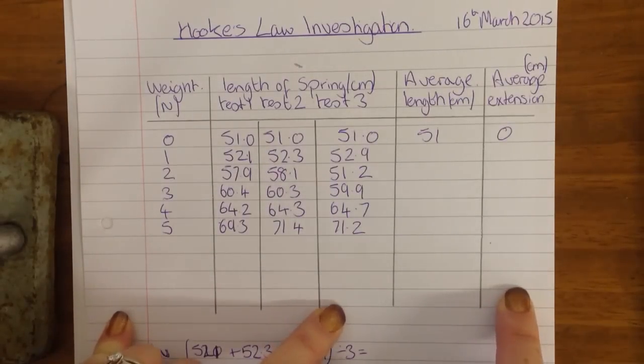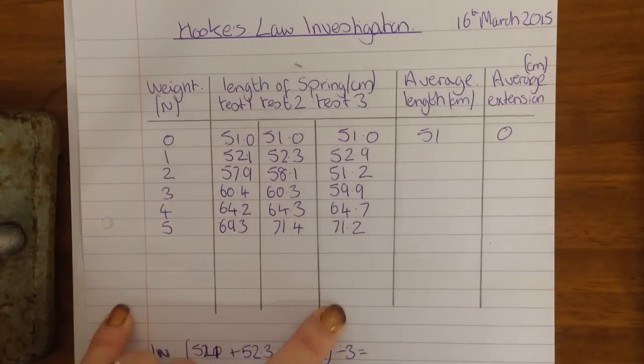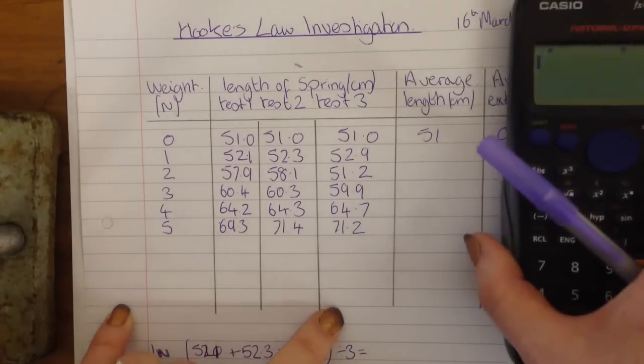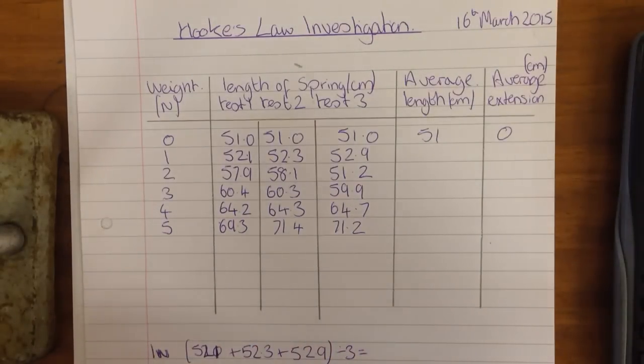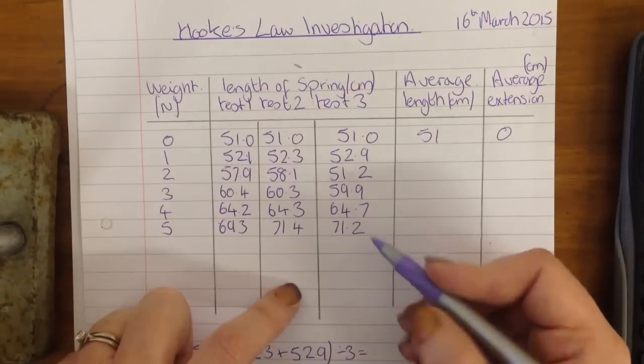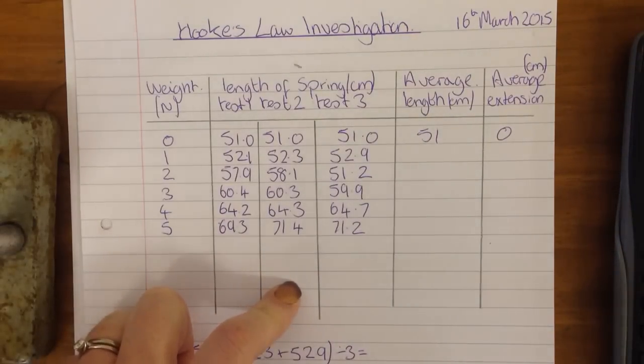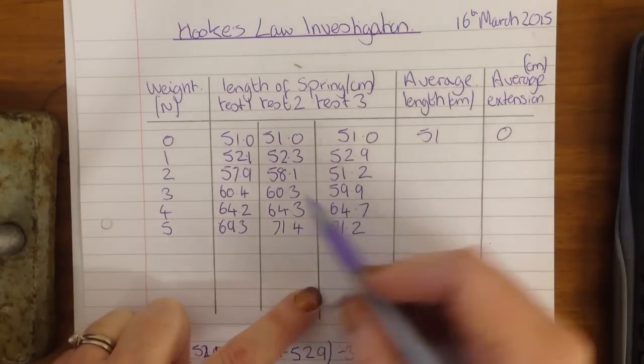The extension I can leave until the end because it wasn't actually the extension I was measuring, it was the length of the spring. So working out our averages. So the first thing you need to do when you work out an average is to have a look at the results and see if any of them look a bit weird.